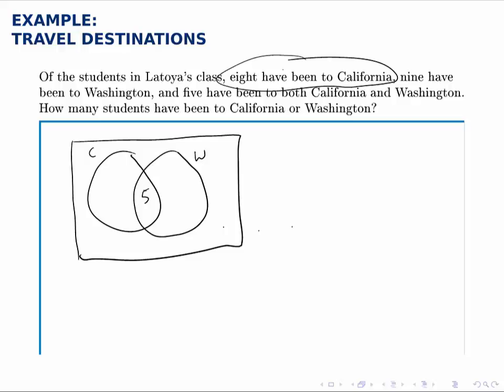Then, because we know that eight have been to California, we've already accounted for five of them. So there are three left, eight minus five, outside the intersection but still within the California circle.